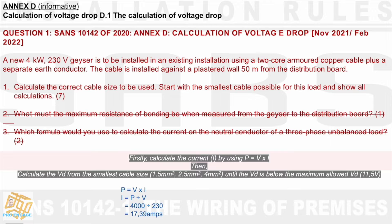There is also question 1.2 and 1.3, which are scratched out because there's no calculation. It just asks: what must the maximum resistance of bonding be when measured from the geyser to the distribution board? From doing COCs and my experience, I know it should be 0.2Ω, and SANS also tells us it is 0.2Ω.